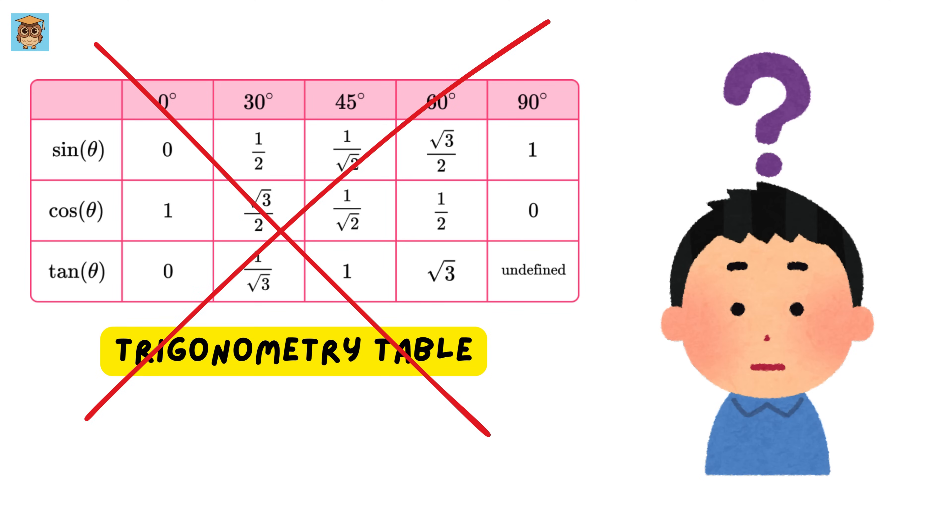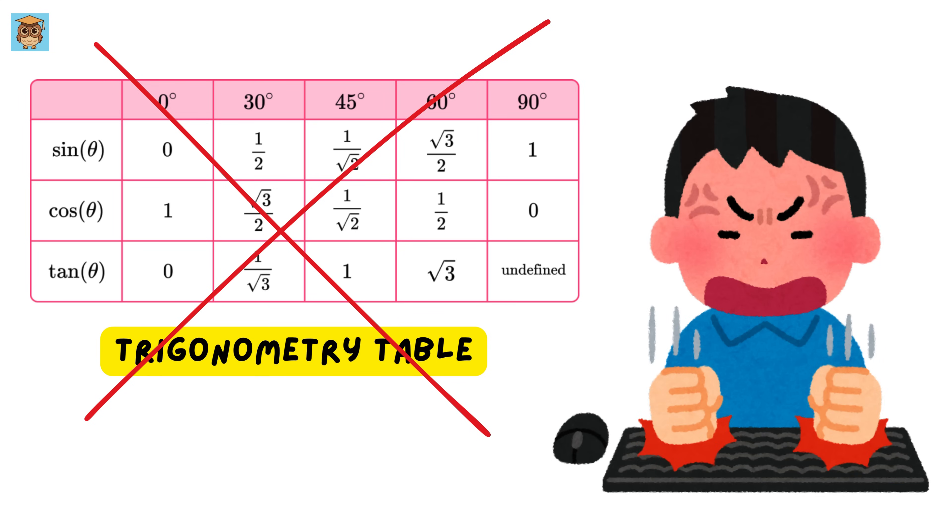In my case, I would often confuse the values for 30, 45, and 60 degrees. And it was honestly so frustrating.